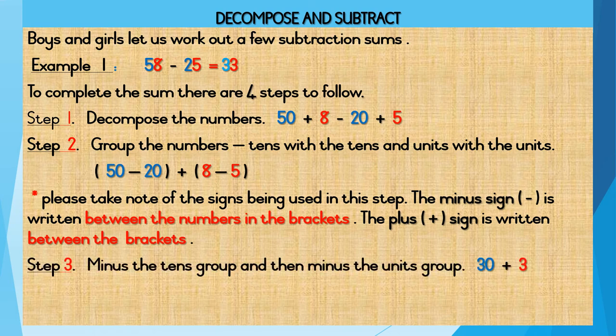Step 3: Minus the tens group and then minus the units group. Your tens group is 50 minus 20. 50 minus 20 is equal to 30. Your unit group is 8 minus 5. So 8 minus 5 is equal to 3. So step 3 will read 30 plus 3.